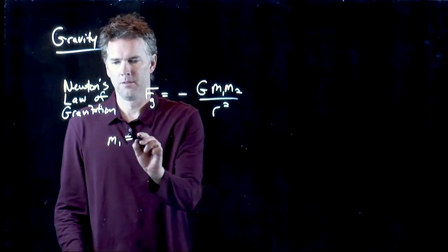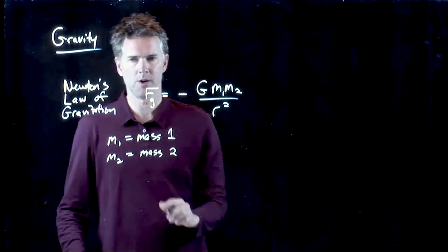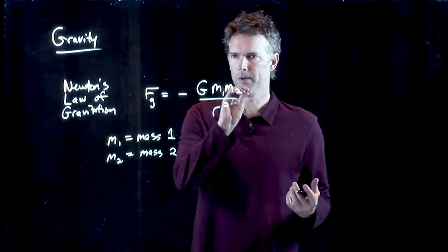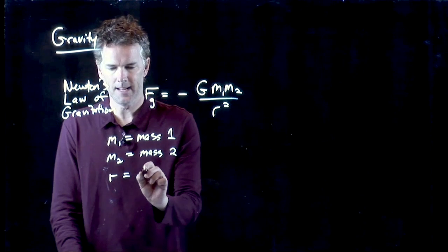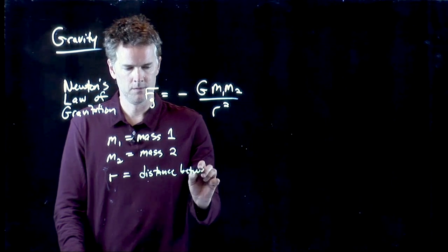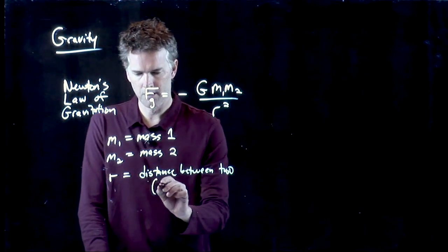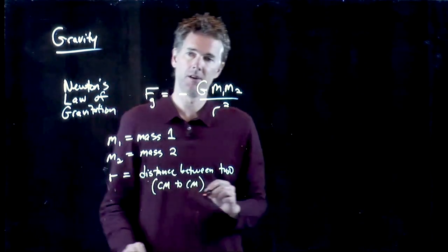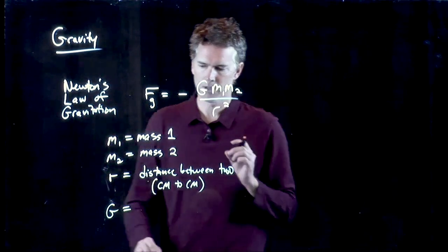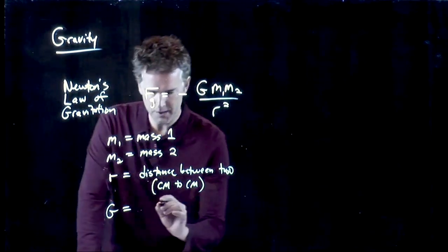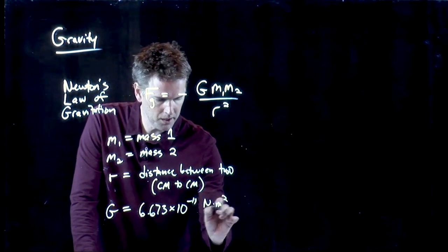M1 is, of course, the mass of one object. M2 is the mass of the other object. So if mass one was the Earth, then mass two would be our Super Ball. R is the distance between the two. And if you have spherical objects, then it's center of mass to center of mass distance. And then finally, G is the universal gravitational constant. And it has a particular number. We'll give you a few digits here. 6.673 times 10 to the minus 11 Newton meters squared per kilogram squared.